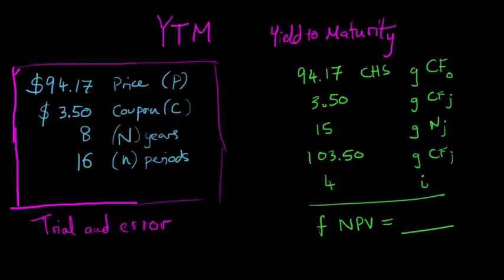The nominal yield on the bond is 7% per annum or 3.5% per half year. And by process of trial and error, I'm going to try to find the yield to maturity at the discounted price of $94.17.